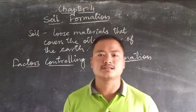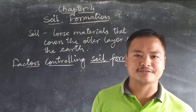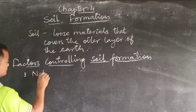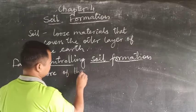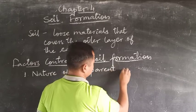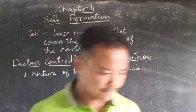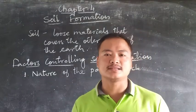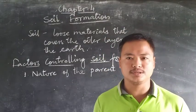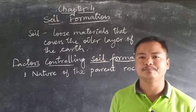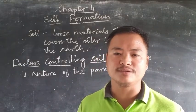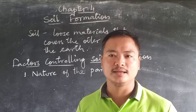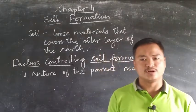Now let us discuss the factors controlling soil formation. The first factor to consider is the nature of the parent rock. The soil that is formed may be of various types — they are not all the same — and this soil is mostly formed by the weathering of rocks.